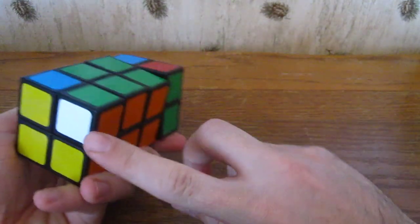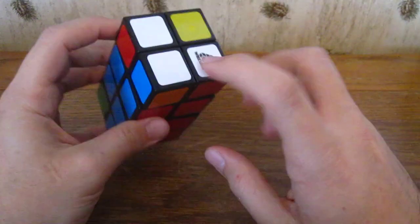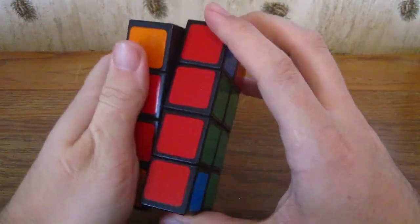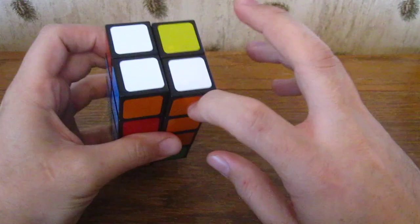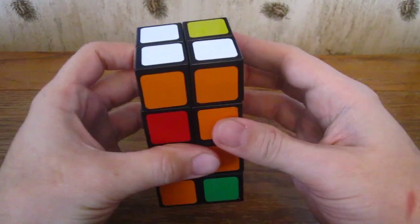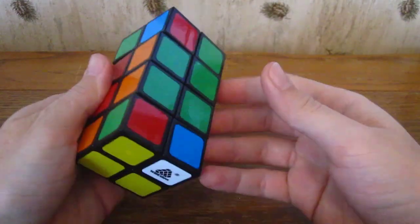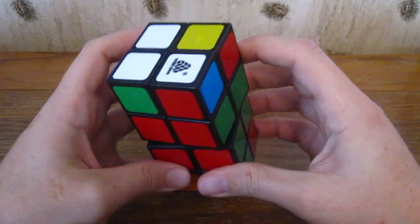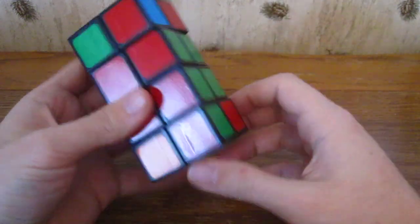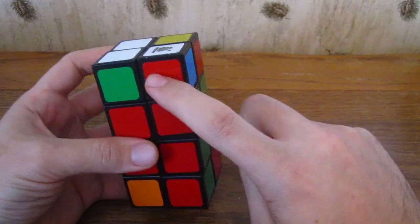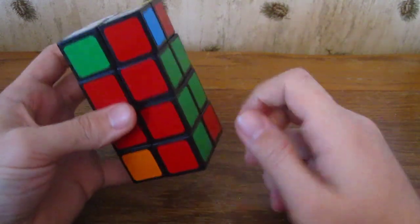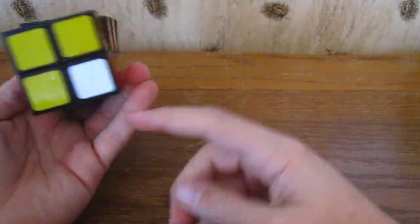I'm going to go ahead and solve the top layer. Let's do white. Here's white green orange, and here's the white orange. If I move the white to the white like that, then that pairs that up correctly.